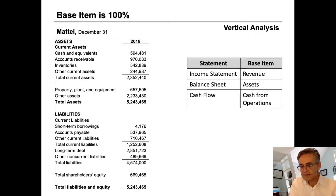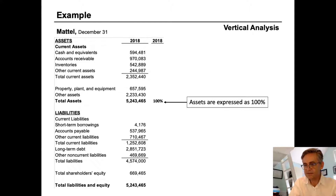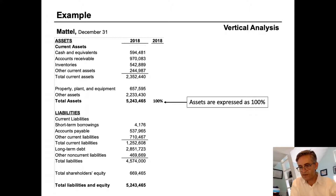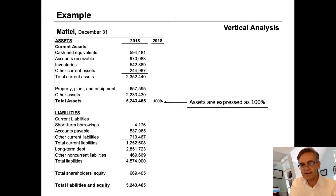In this case, we're going to build a simple vertical analysis with Mattel's balance sheet so that we can learn how a vertical analysis can be helpful. The balance sheet base item is usually total assets, and it is always expressed as 100%. Then all the other items on the balance sheet are expressed as percentages of the base item.